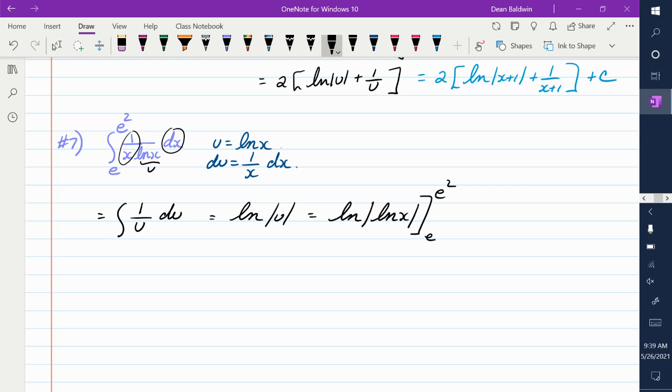And it's evaluated from e to e squared. So there's a natural log inside of another natural log. We're just kind of messed up. So now I put in the top term. So it's the natural log of the natural log of e squared minus the natural log of the natural log of e.